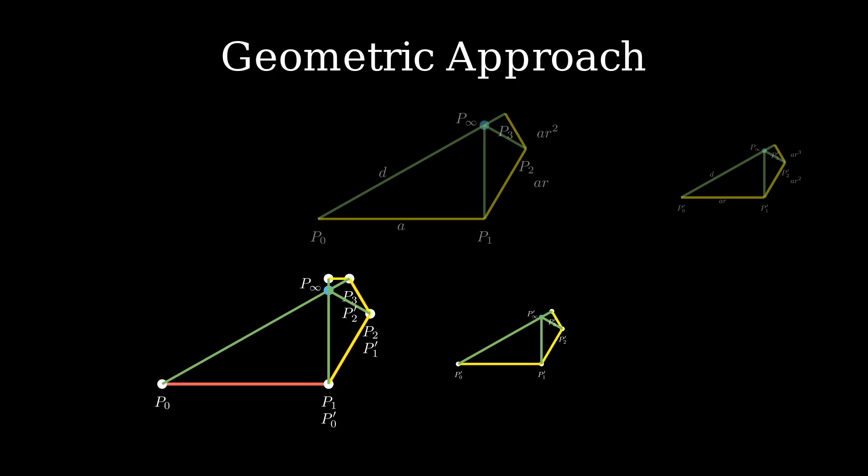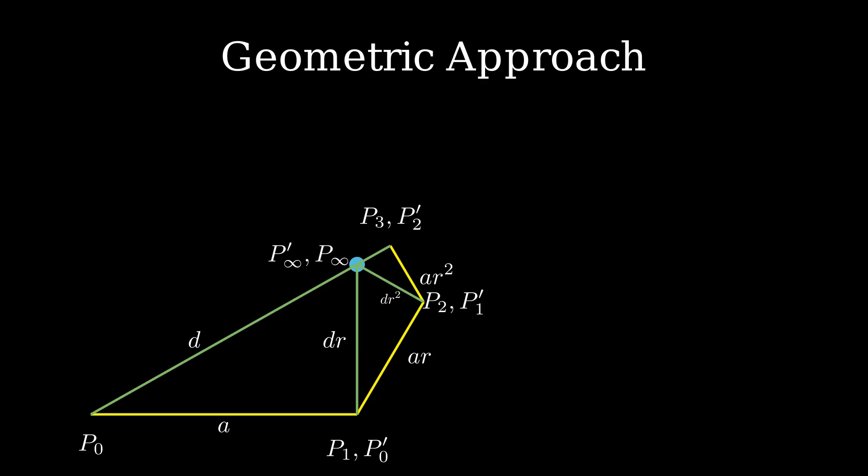Now, let's start marking various distances on the figure. We have P0 P infinity equals D, P1 P infinity equals DR, and P0 P1 equals A.